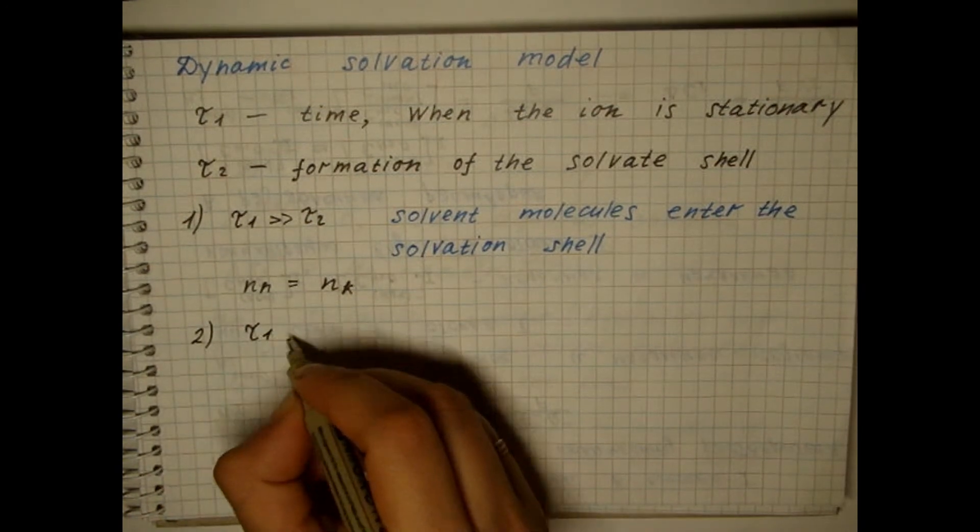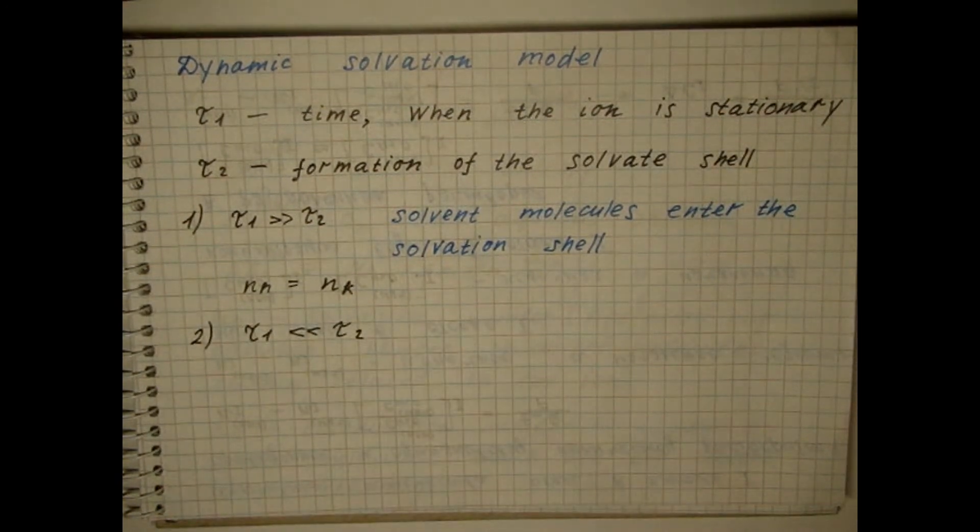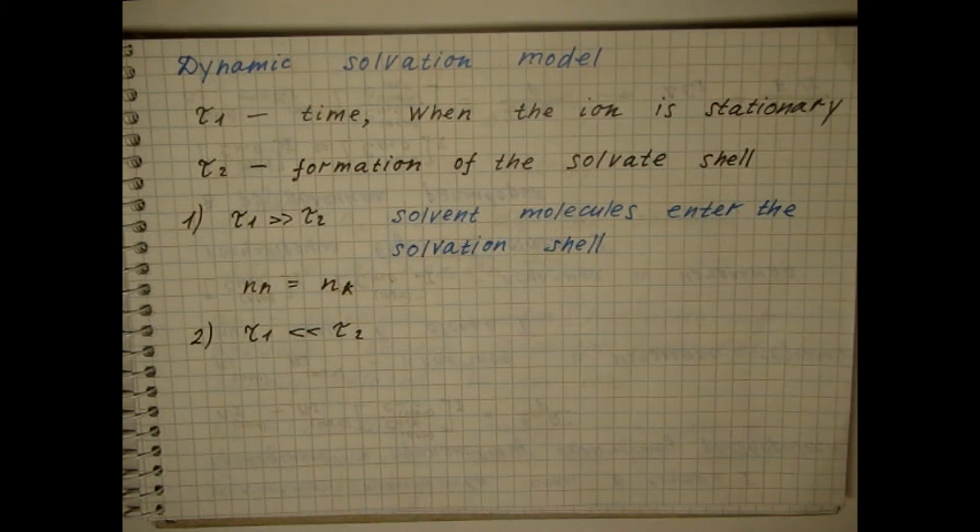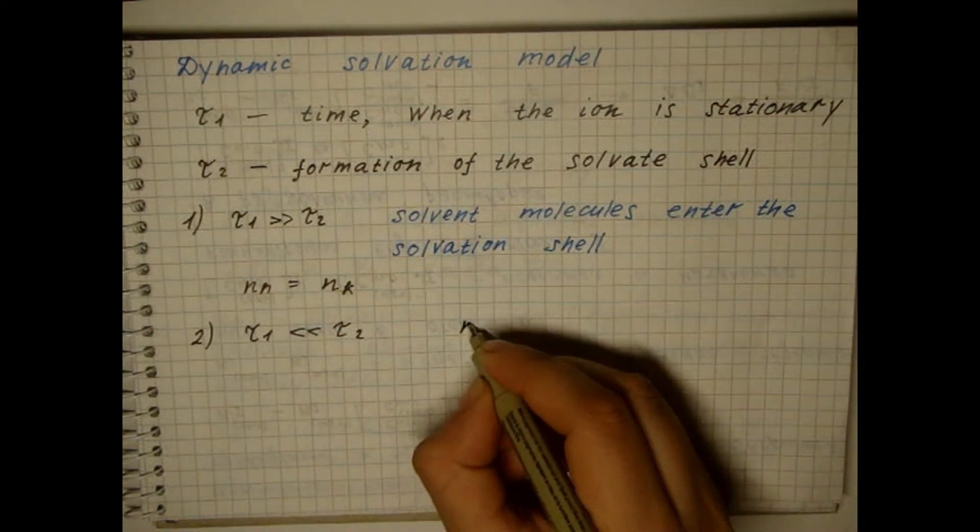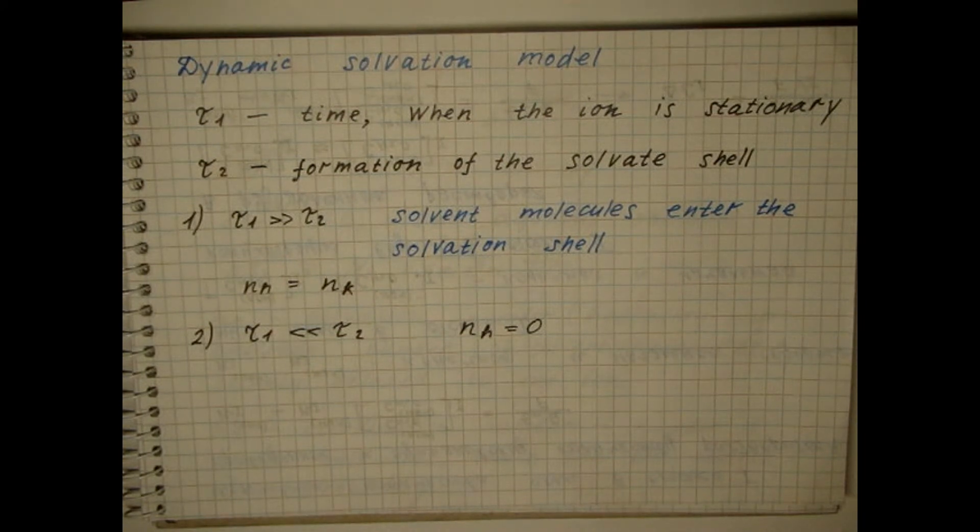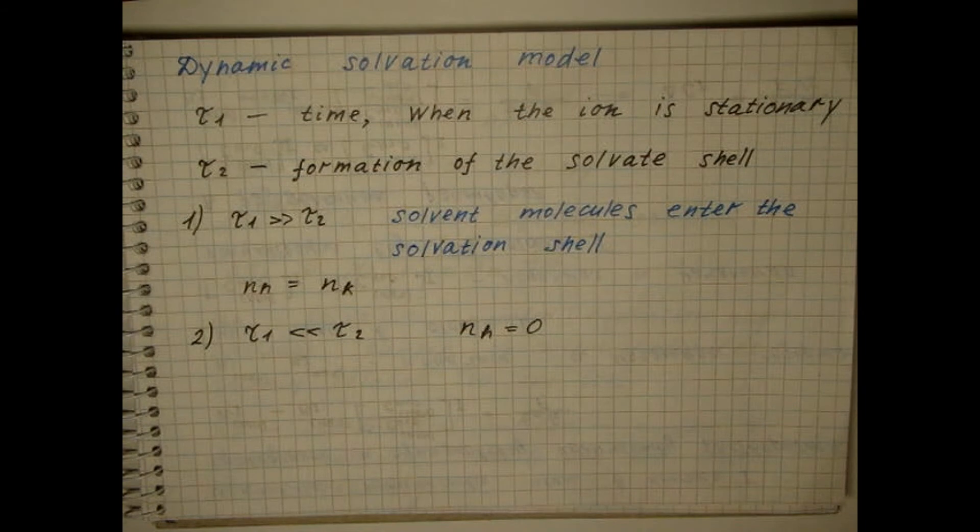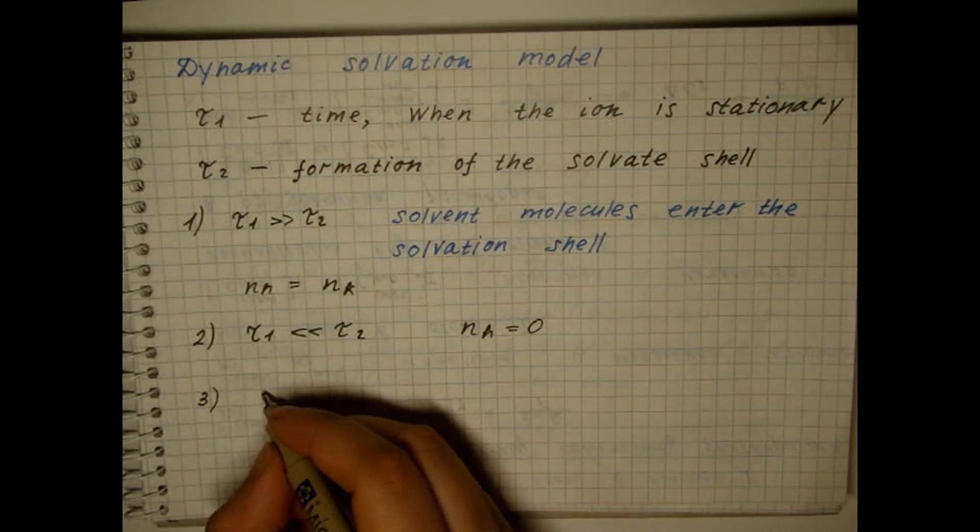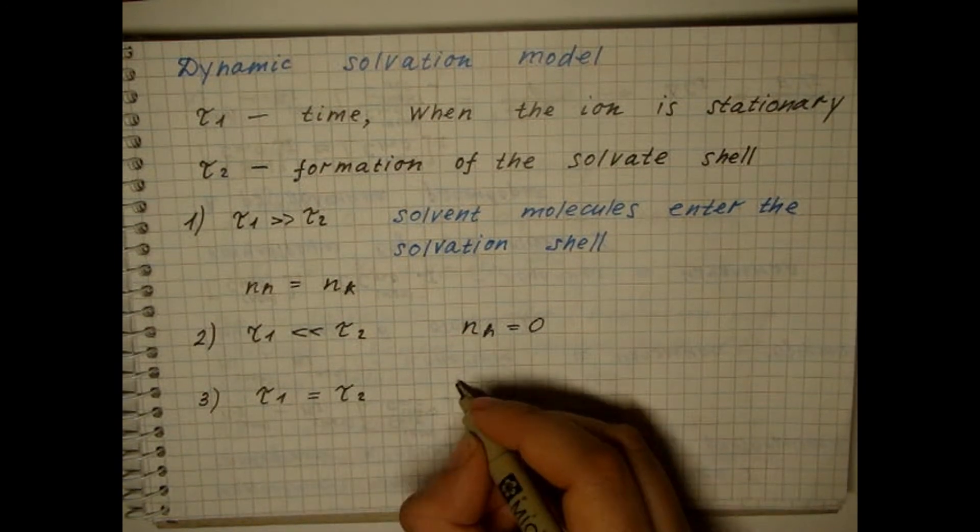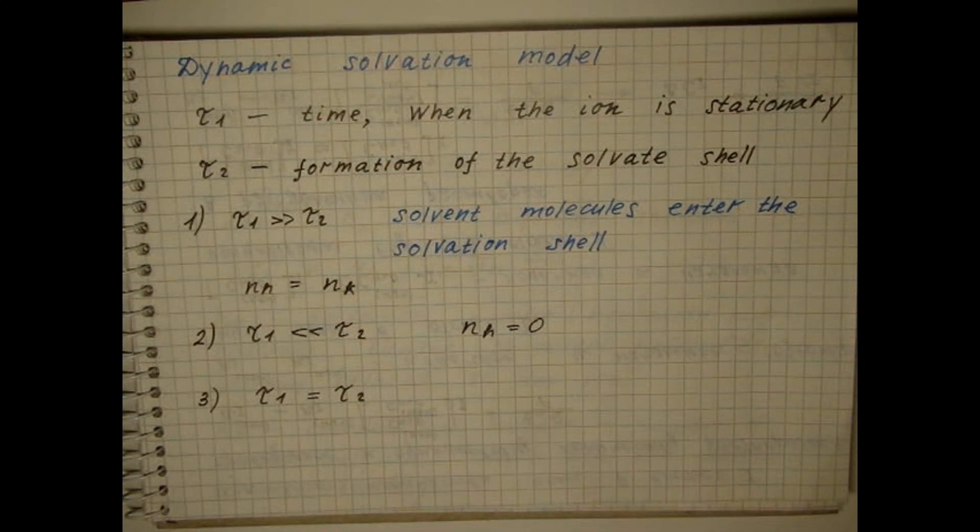If the solvent dipoles in the solvation shell change very quickly, then the experimental value will be smaller. This result is obtained for ions of larger radius and small charge, for example, for iodine and cesium ions. In the case when T1 is equal to T2, the solvation numbers take values from 0 to the coordination number.